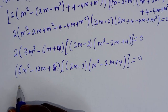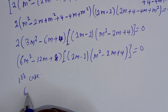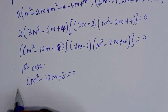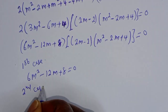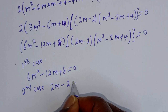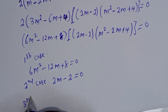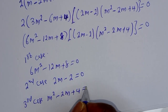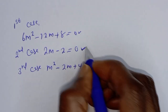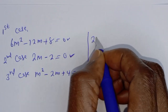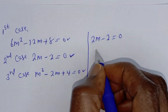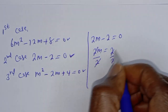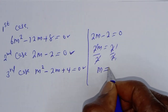There are 3 cases here. The first case is 6m squared minus 12m plus 8 equals 0. The second case is 2m minus 2 equals 0. The third case is m squared minus 2m plus 4 equals 0. From the second case: 2m minus 2 equals 0, so 2m equals 2. Dividing both sides by 2, therefore m is equal to 1.